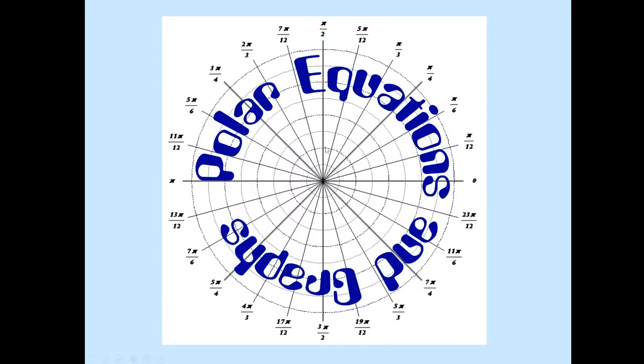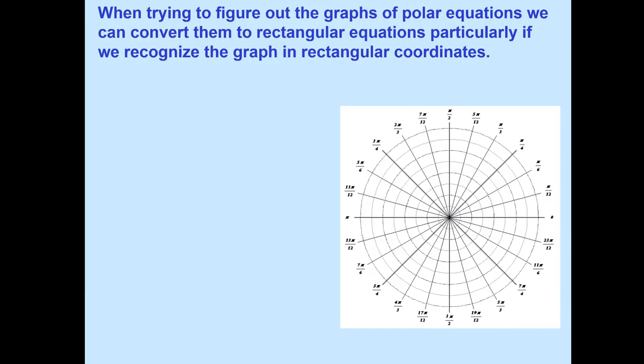So again, this is section 8.2. As you can see, this is just a unit circle — or you can say it's a polar coordinate system, the polar graphing template. We'll be using it when trying to figure out the graph of polar equations. We can convert them to rectangular equations.